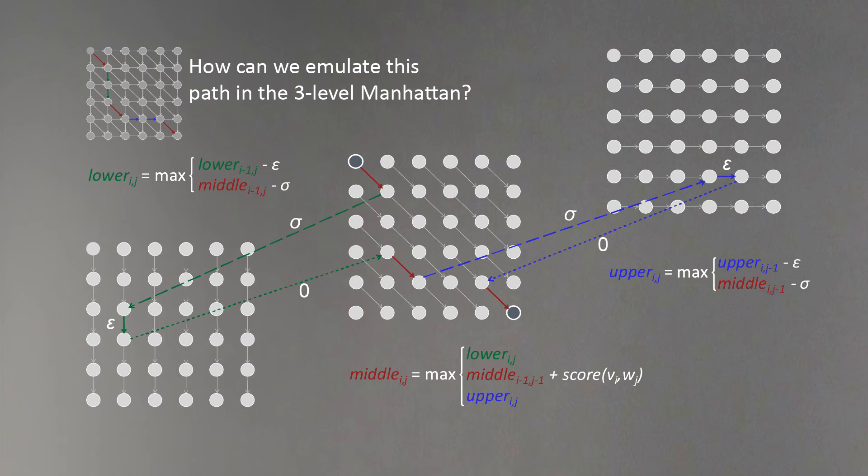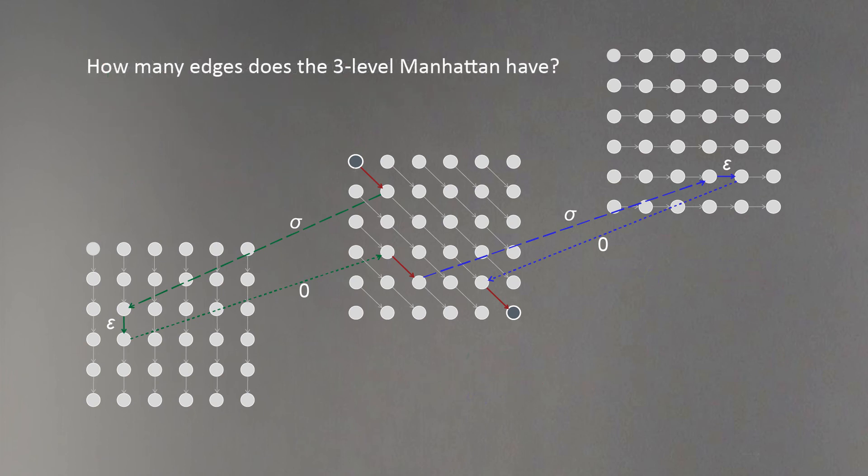To model this mathematically, we can have three different equations for dynamic programming for each level. The lower level will use information from the lower level itself and the middle level. The middle level will use information from all three levels, and the upper level will use information from the upper level itself and the middle level.